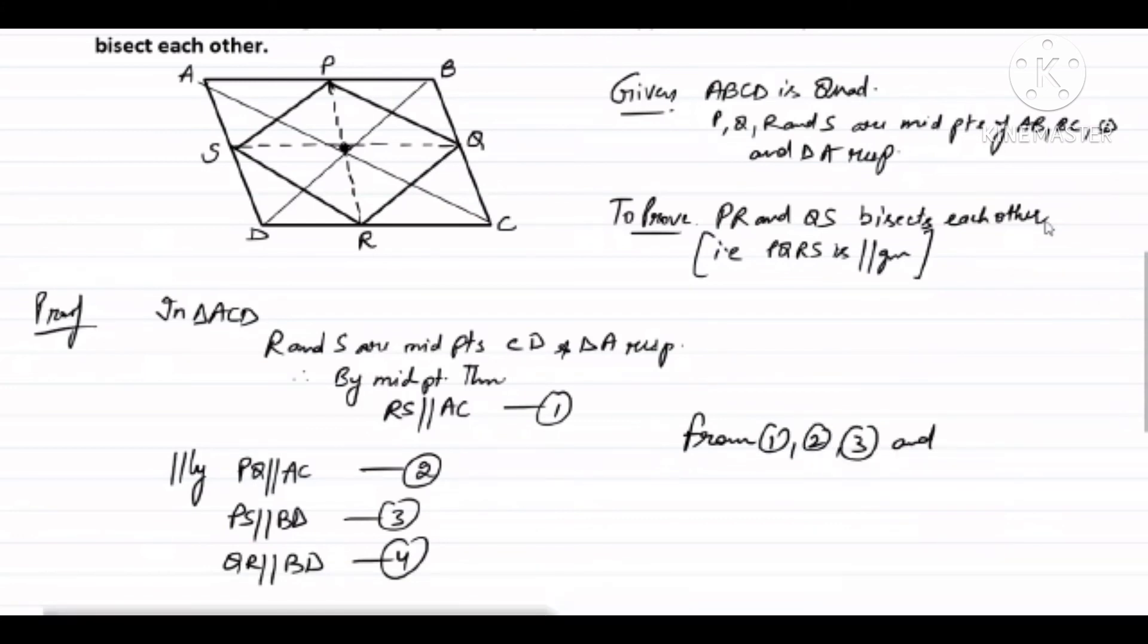From one, two, three, and four, what result do I get? Since PQ is parallel to AC and AC is parallel to RS, I can say that PQ is parallel to RS. And PS is parallel to QR. Now in quadrilateral PQRS, PQ is parallel to RS and PS is parallel to QR. That is, opposite sides of the quadrilateral are parallel.